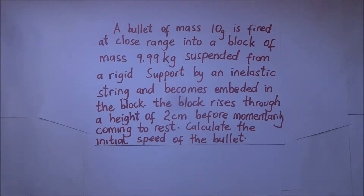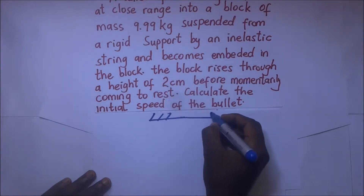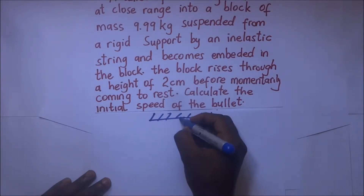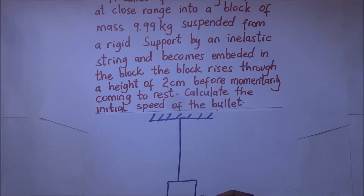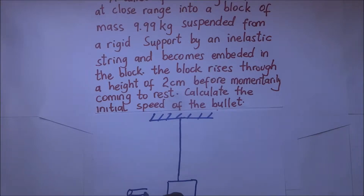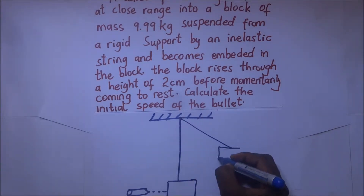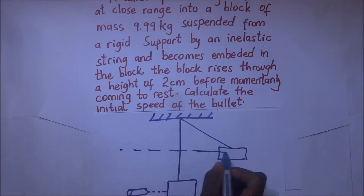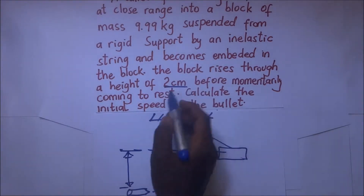We will summarize this question with a diagram. We have a string tied to a rigid support, and hanging from it is a block. A bullet is fired into this block, causing it to rise up to a certain level. The height through which it raises to that level — the question says it is going to raise two centimeters.